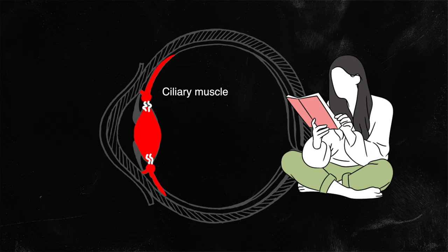When one is viewing closer objects, the ciliary muscles constrict, releasing the tension within the zonules leading to the fattening of the crystalline lens, also known as accommodation.